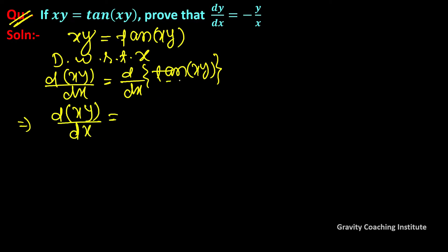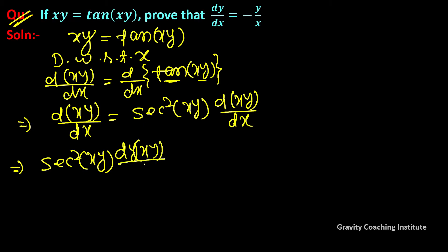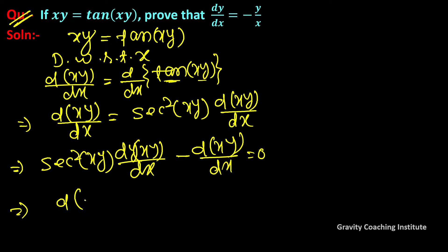We apply the chain rule on tan(xy), giving sec²(xy) into the derivative of xy with respect to x. Then we have sec²(xy) · d(xy)/dx minus d(xy)/dx equal to 0.